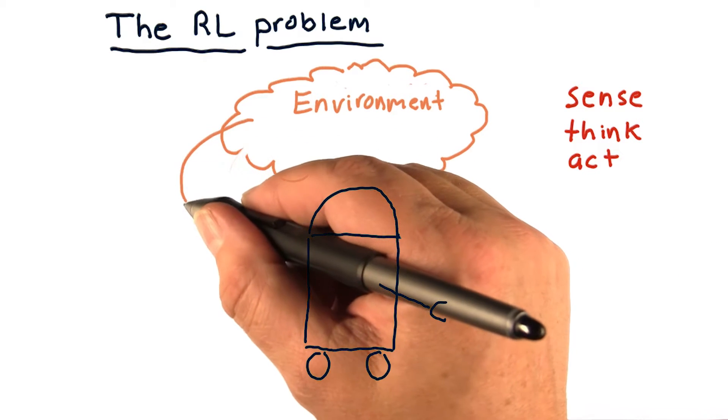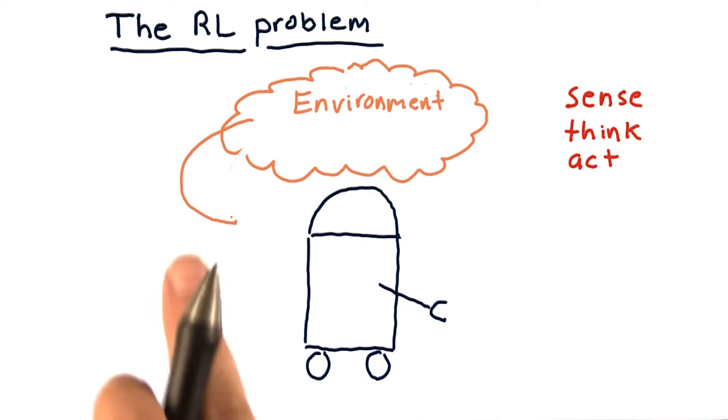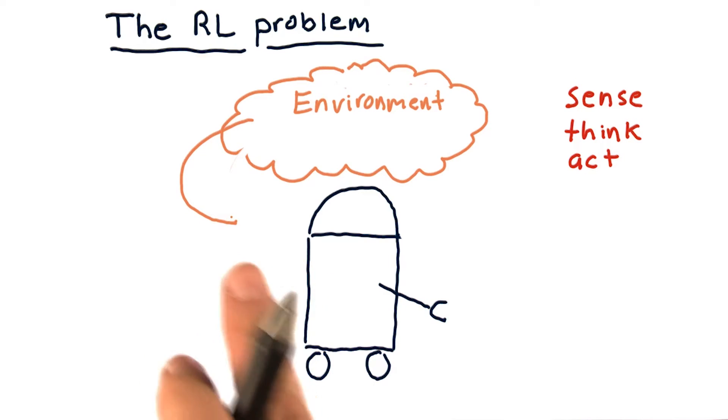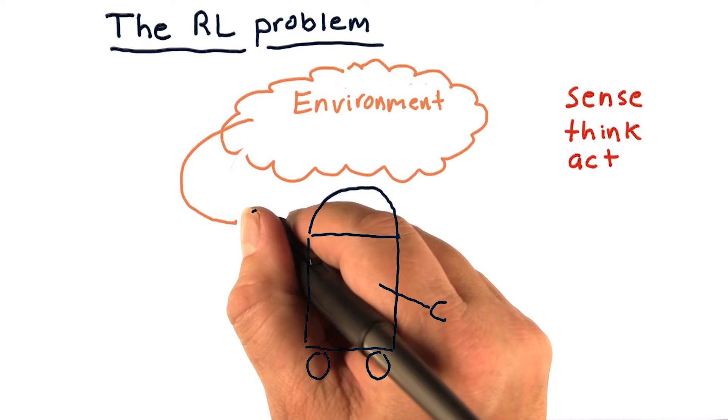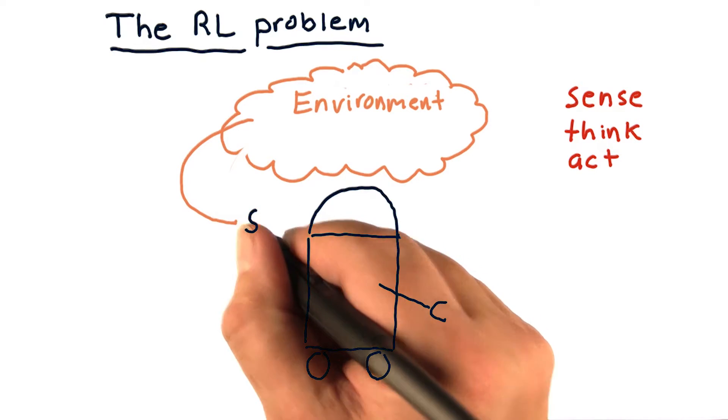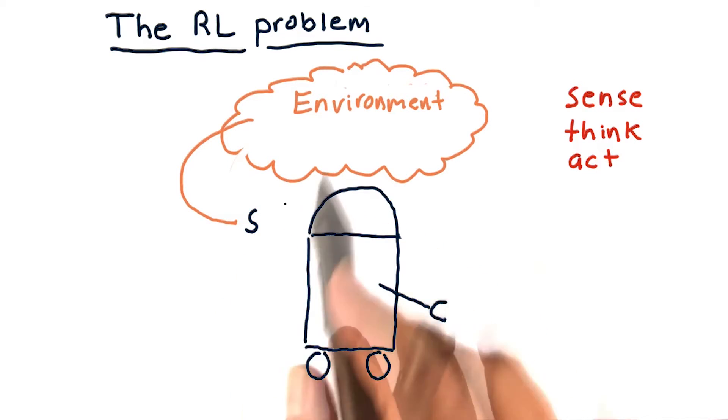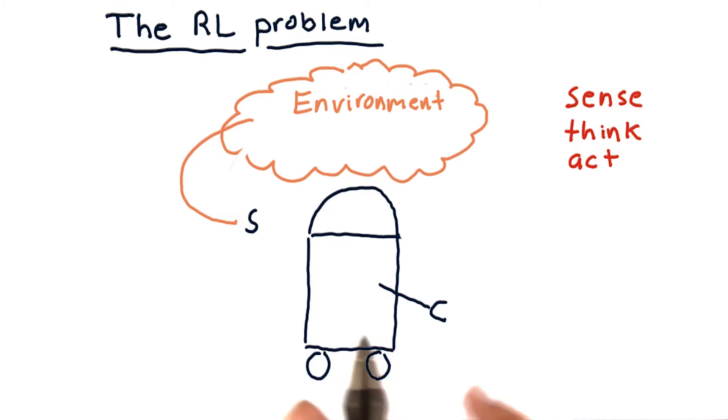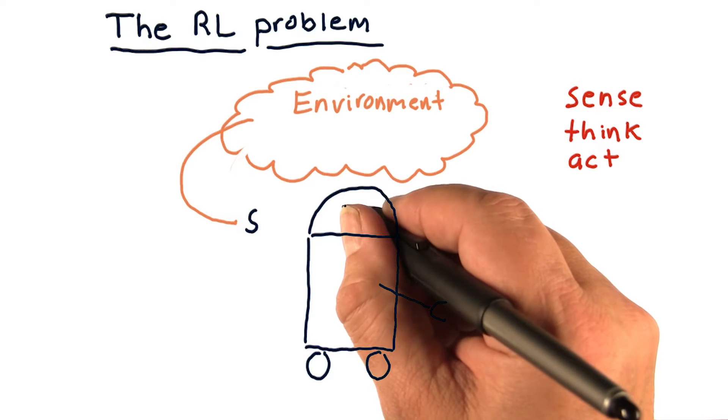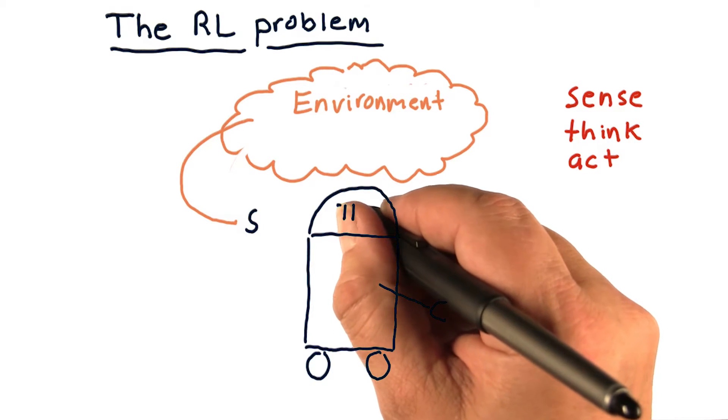Our robot observes the environment, and some form of description of the environment comes in. Let's call that the state S. So S is our letter that represents what we see in the environment. Now the robot has to process that state somehow to determine what to do, and we call this pi or policy.